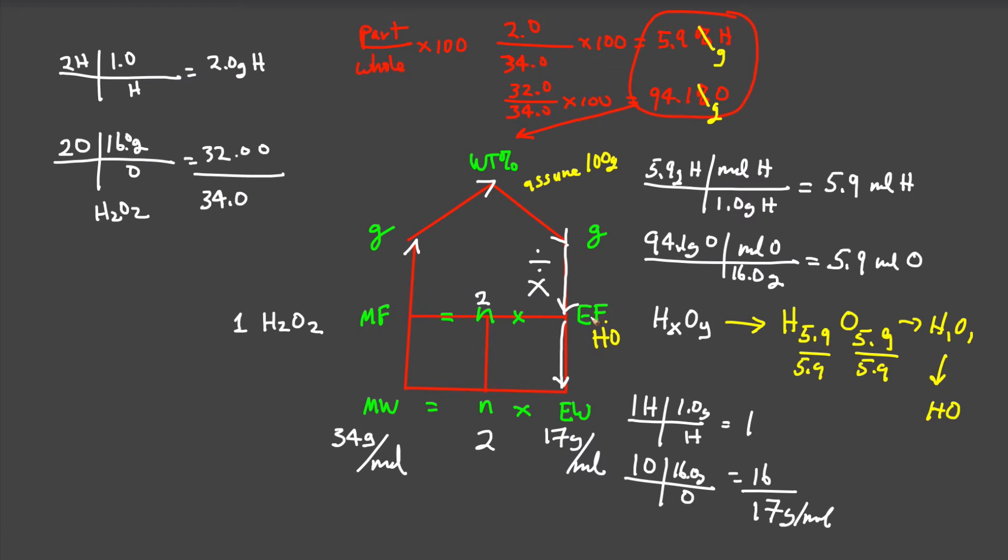So if N equals 2, then we know we have two empirical formula units in our molecular equation. The empirical formula HO repeats twice, which means I have two hydrogens and two oxygens. So starting with the weight percent, we were able to back calculate and see that our formula was H2O2. And indeed we know from where we started it was H2O2.